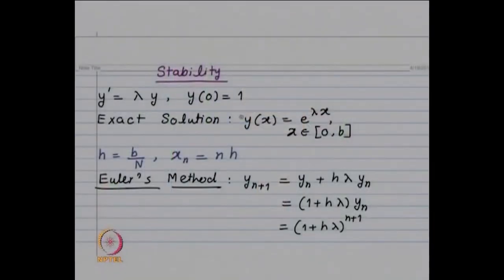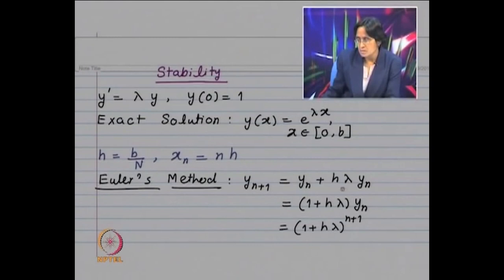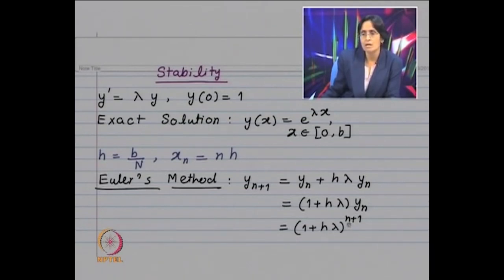With y' = λy and y(0) = 1, let us look at the solution over the interval 0 to b. The interval 0 to b will be subdivided into n equal parts, so h = b/n and x_n = nh since x_0 = 0. In Euler's method we have y_{n+1} = y_n + h·f(x_n, y_n). Our f(x,y) = λy, so y_{n+1} = y_n + hλy_n = (1 + hλ)y_n. Replacing y_n by (1+hλ)y_{n-1} and so on, we get y_{n+1} = (1 + hλ)^(n+1).